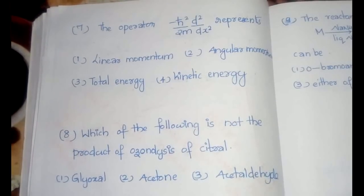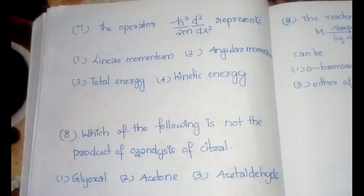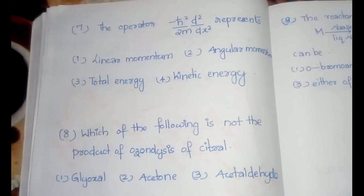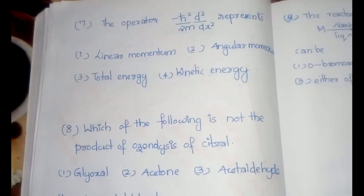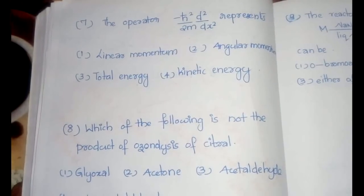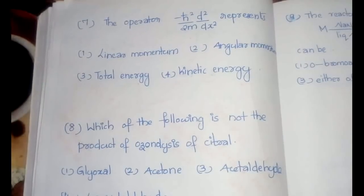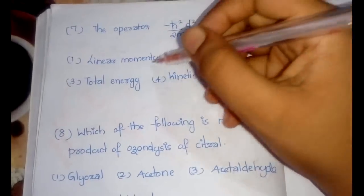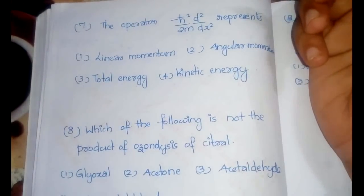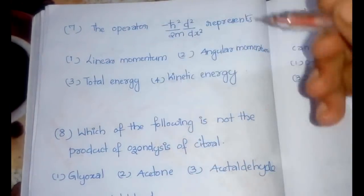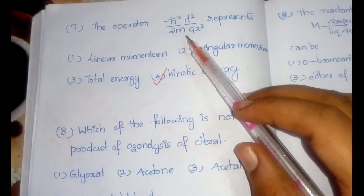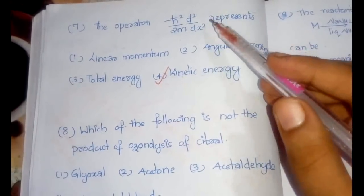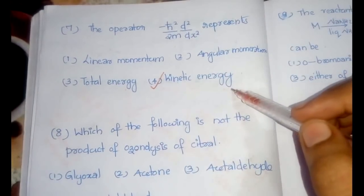You should be thorough with all three topics before attempting quantum mechanics questions, otherwise you risk negative marking. When you have only a limited amount to learn, please don't be lazy — it will give you easy marks. The answer to this question is kinetic energy: −ℏ²/2m × d²/dx² is the representation of kinetic energy.